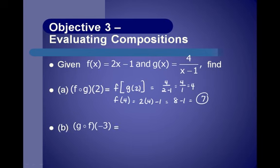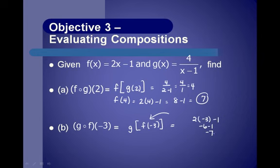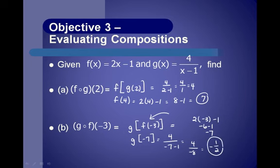For g of f of negative 3, start inside with f of negative 3: substitute negative 3 into 2x minus 1 to get 2 times negative 3 minus 1, which is negative 6 minus 1, equals negative 7. Then find g of negative 7: substitute into 4 over x minus 1 to get 4 over negative 7 minus 1, which is 4 over negative 8, equals negative one-half. So g of f of negative 3 is negative one-half.